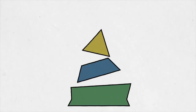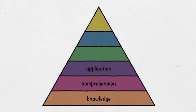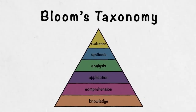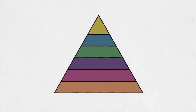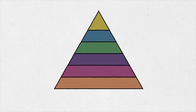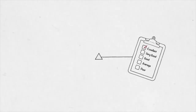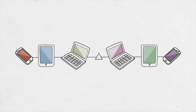Most educators are familiar with Bloom's Taxonomy, a model that classifies different levels of human cognition in thinking, learning, and understanding. As a teacher, you've likely used this taxonomy to guide the development of curriculum, assessments, and instructional strategies. But how is this model affected in an age of digital technology, and how might it influence your instructional design?